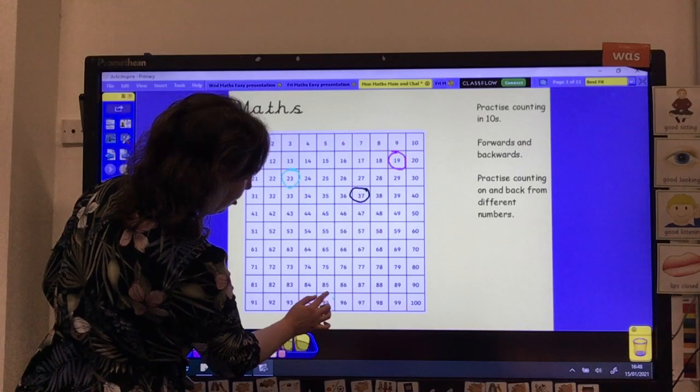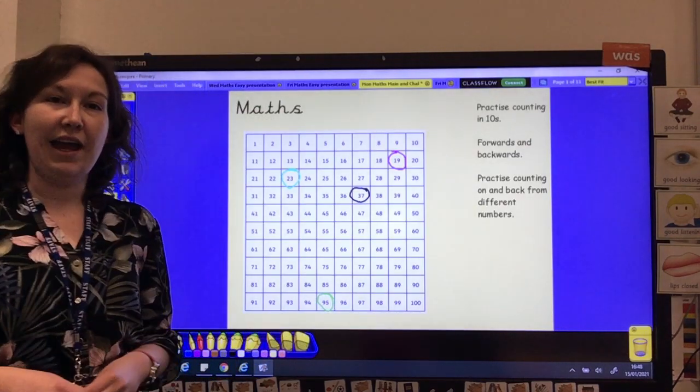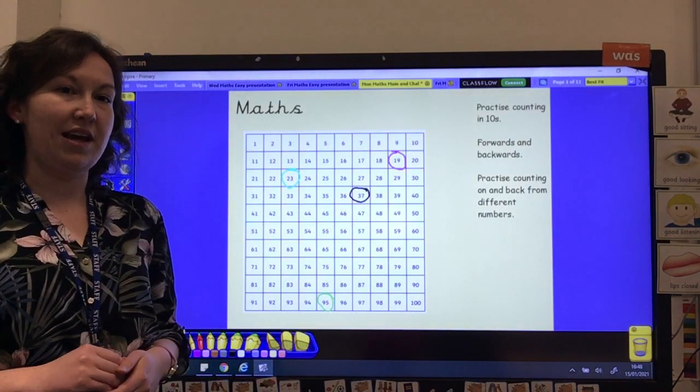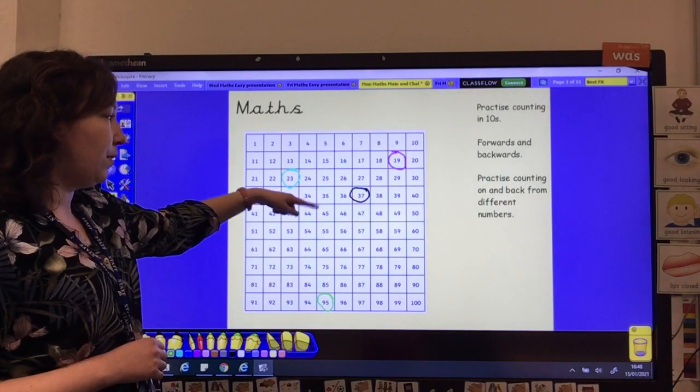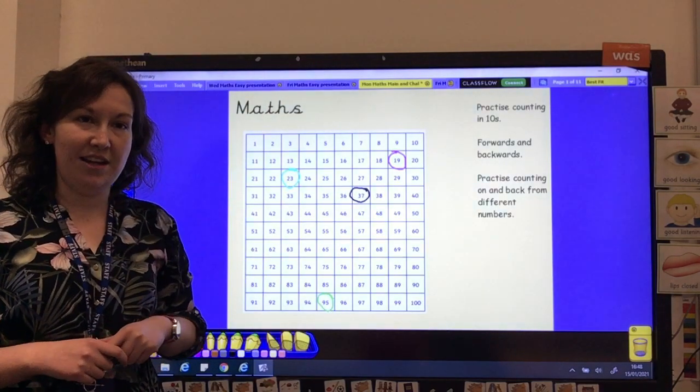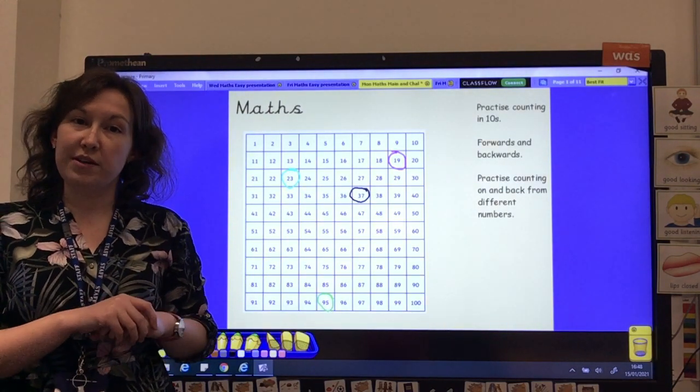And two more. Let's start on 95 and count backwards in 10s this time. So remember you're jumping up the number square, taking away 10 each time. So pause your video and have a go at doing that one.